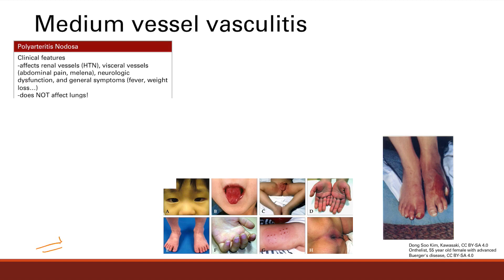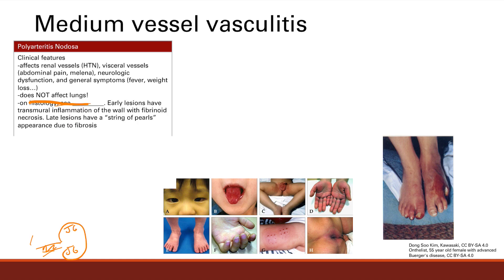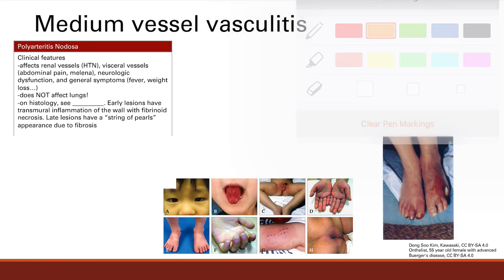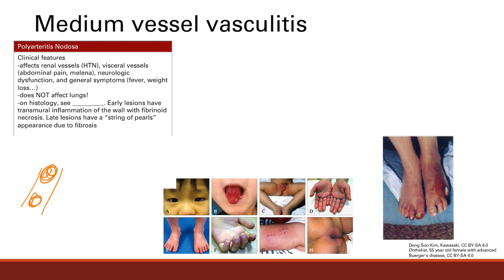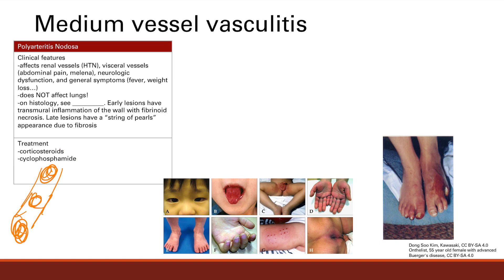Neurologic dysfunction and vague systemic symptoms like fever and weight loss also occur. A key distinguishing feature is that polyarteritis nodosa does not affect the lungs. Histologically, you see varying stages of inflammation: early lesions show transmural inflammation and fibrinoid necrosis, while later lesions show a string of pearls appearance from fibrosis. Treatment is corticosteroids and cyclophosphamide.